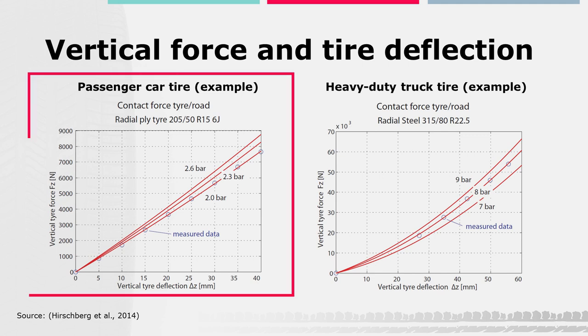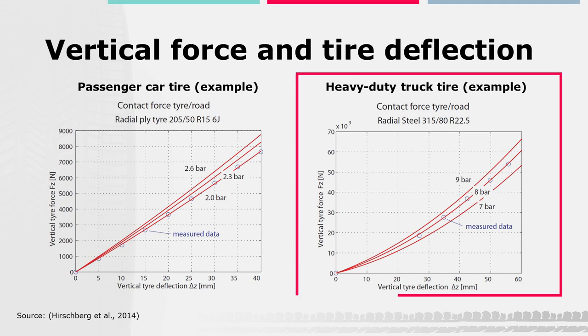Exemplarily, they are shown on the left side for a passenger car tire and on the right side for a truck tire. With increasing vertical load, the vertical stiffness increases, leading to a non-linear progressive force deflection behavior. This means that the vertical stiffness of a tire is a function of the vertical deflection too. To give you a better sense, simplified, the stiffness of a typical passenger car tire is in the range of 200 kN per meter.